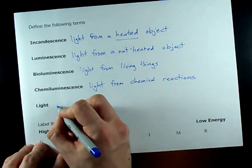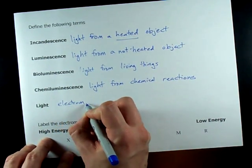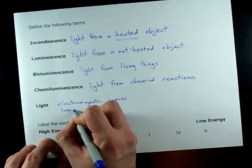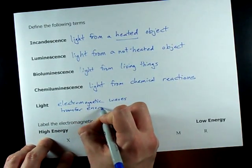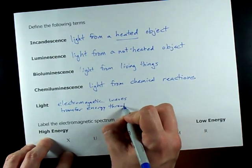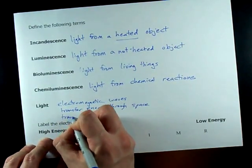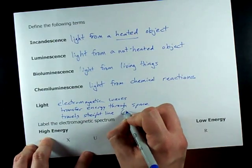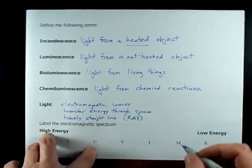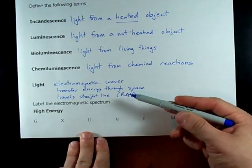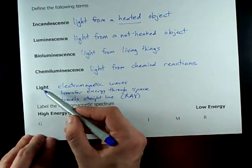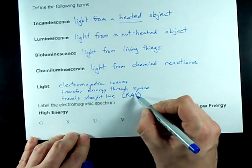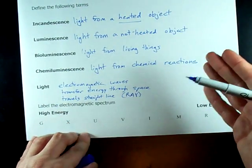And finally, they could ask you to define light. Light is electromagnetic waves that transfer energy through space, and it travels in a straight line. That straight line is called a ray. If you're asked to define a ray, the answer is the straight line that represents the path of light. They're the same thing, except light is the actual energy and the ray is just the line that shows where it goes.